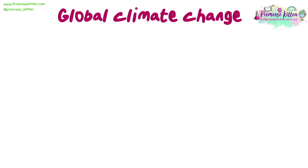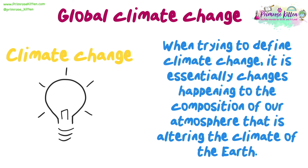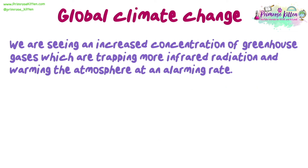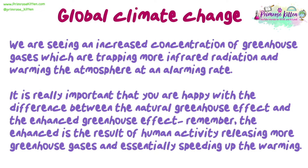Global climate change. When trying to define climate change, it is essentially changes happening to the composition of our atmosphere that is altering the climate of the Earth. We are seeing an increased concentration of greenhouse gases, which are trapping more infrared radiation and warming the atmosphere at an alarming rate. It is really important that you are clear on the difference between the natural greenhouse effect and the enhanced greenhouse effect. Remember, the enhanced greenhouse effect is the result of human activity releasing more greenhouse gases, essentially speeding up the warming.